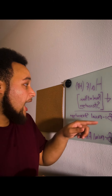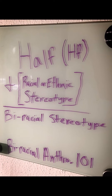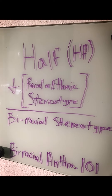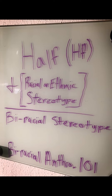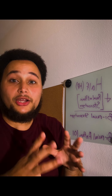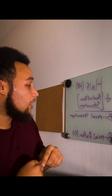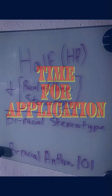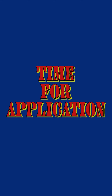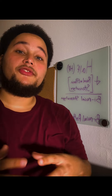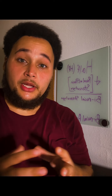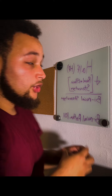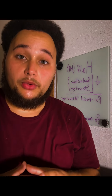Then you add it by the racial or ethnic stereotype. Now this can be ethnicity — some people say that's bi-ethnic, it doesn't matter, the equation still works. You add those together and you get your biracial stereotype. So here comes the really fun part: now that we know the fundamentals of being biracial and the fundamentals of our equation, we're going to take this and apply it to a real-world setting.